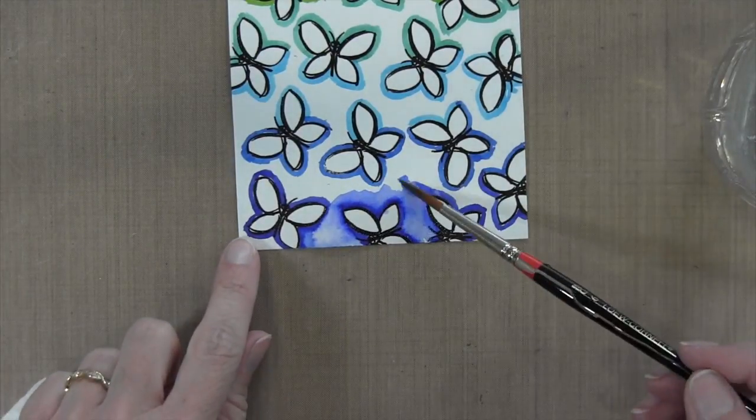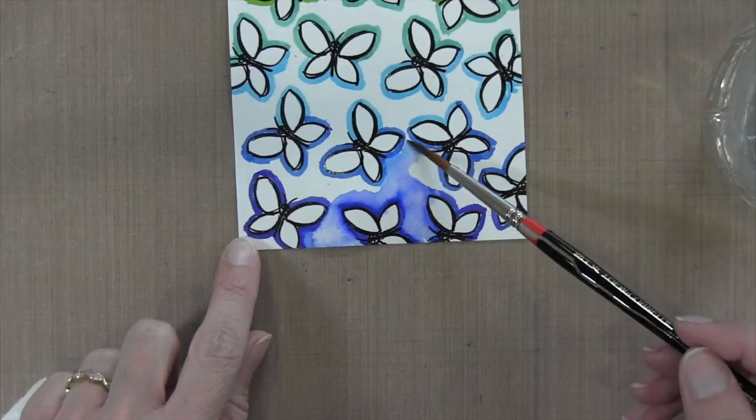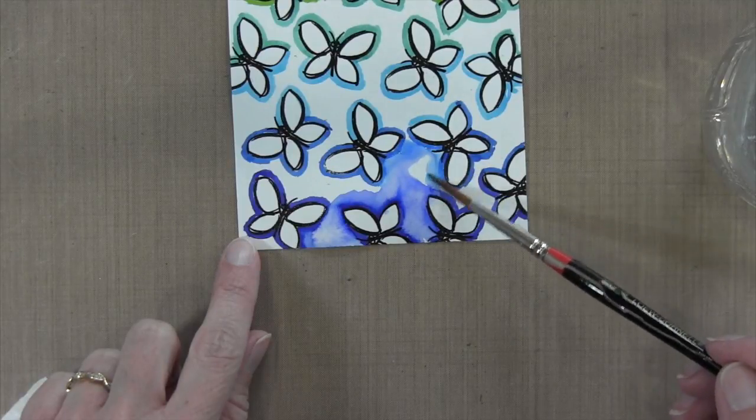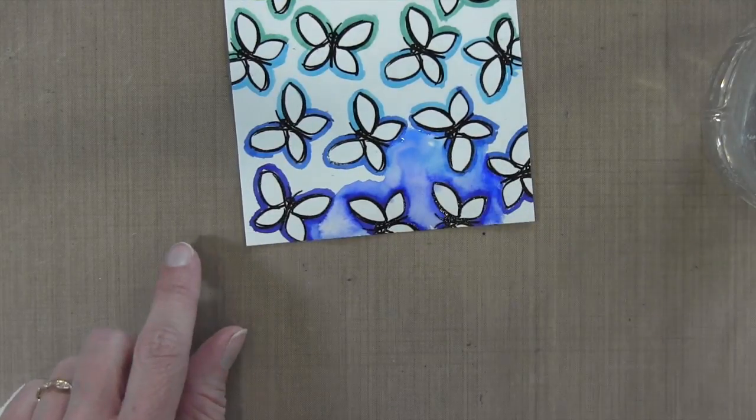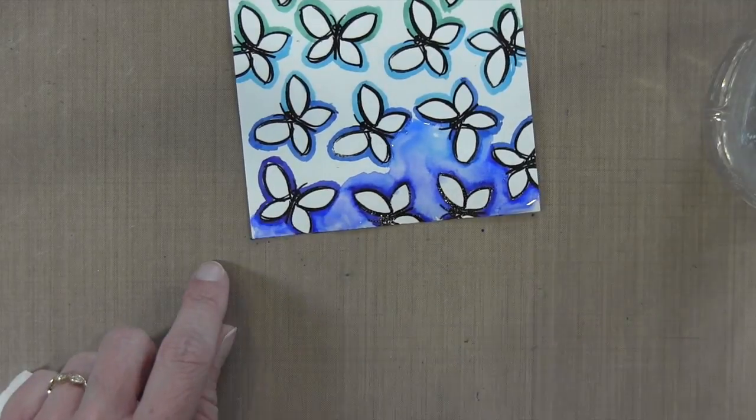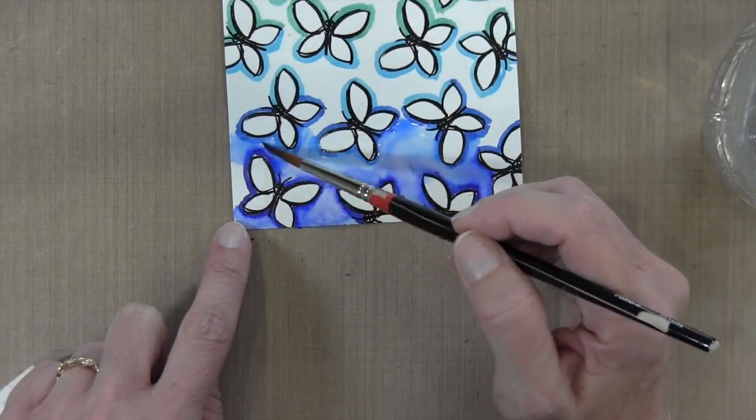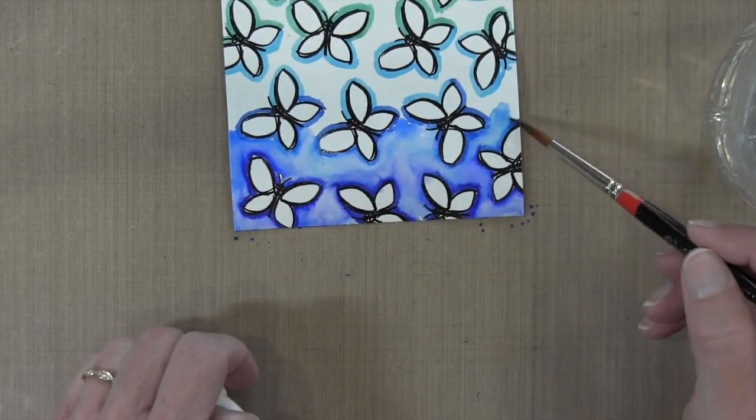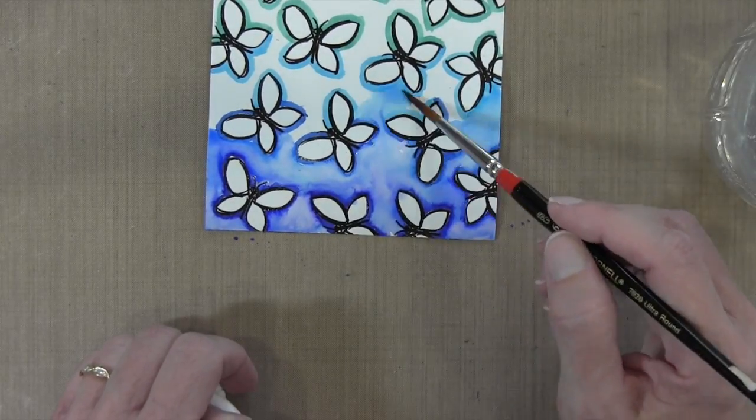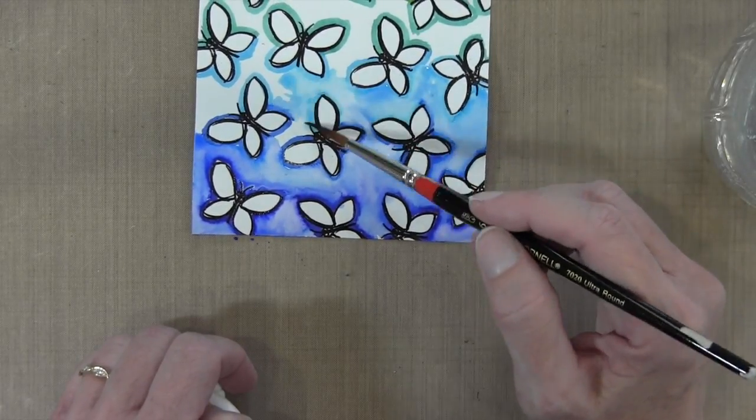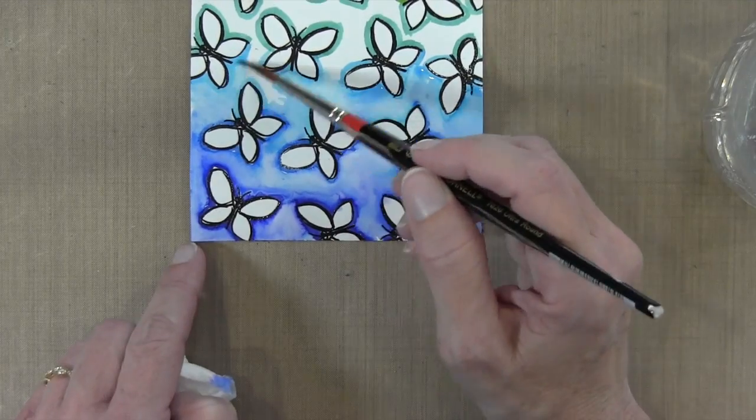As I'm tapping the water in, I'm being careful to leave the part that was drawn in with the marker kind of alone. I'm trying to create a little pop of each butterfly by making the area directly around it a little bit darker with the direct to paper marker.